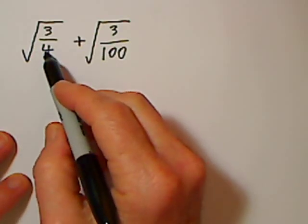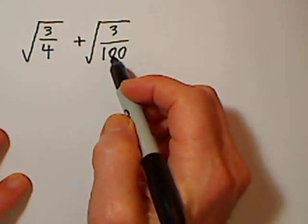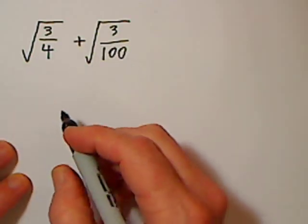It turns out that 4 is a perfect square and 100 is a perfect square, so we can actually simplify each of these first.